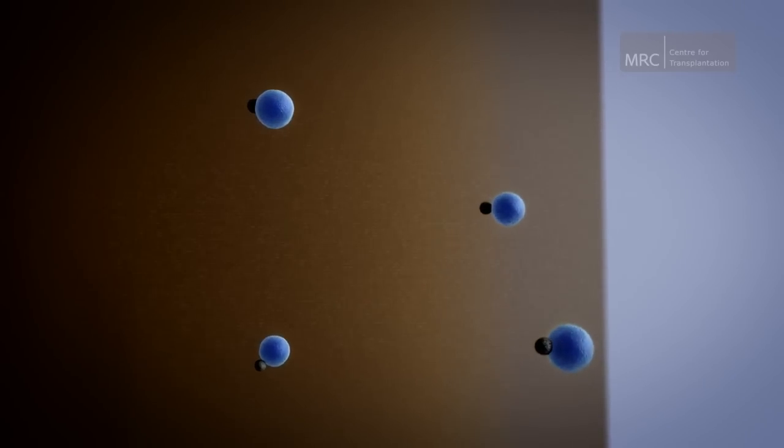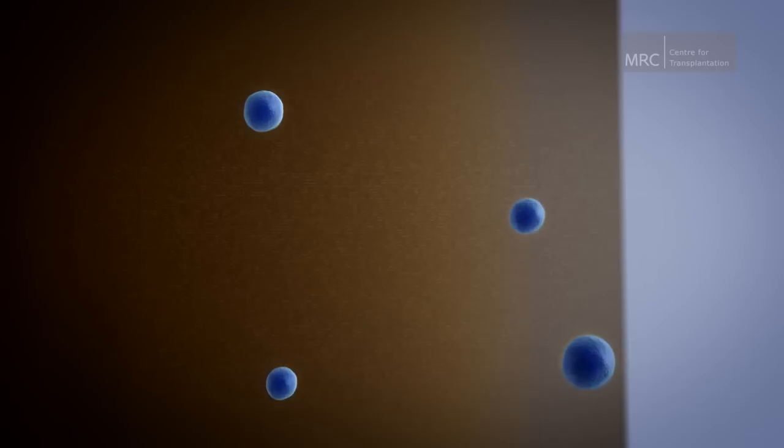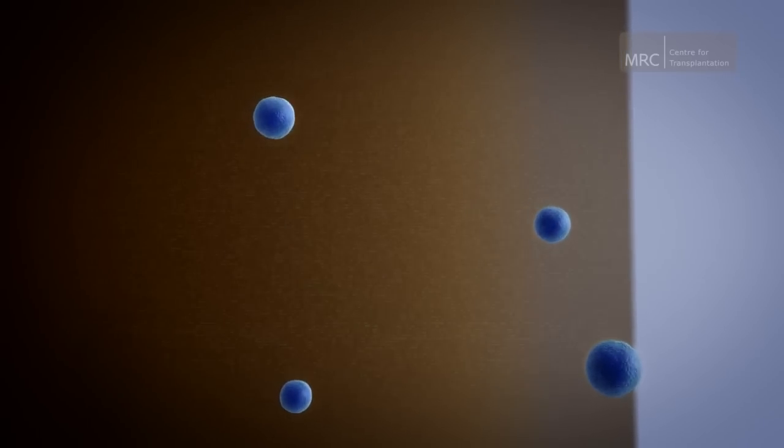Would be alerted to its presence by dendritic cells. Different T cells from those attacking the kidney will attack and destroy the virus-infected cells.